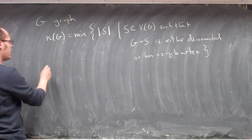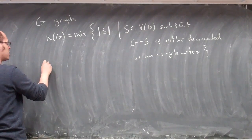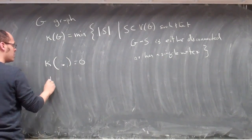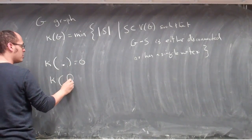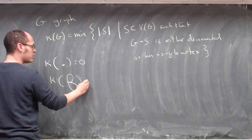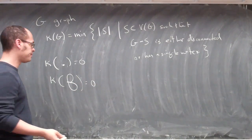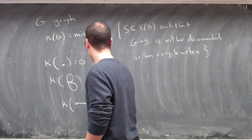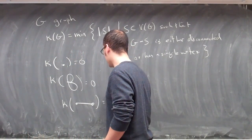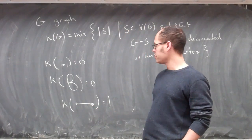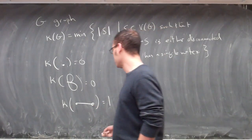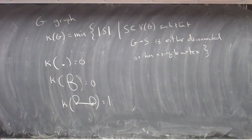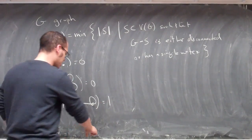For example, the connectivity of a single vertex would be zero. The connectivity of a vertex with a couple of loops is also zero. The connectivity of a graph like this would be one. Removing one vertex gives you a graph with just a single vertex, and that's also one.